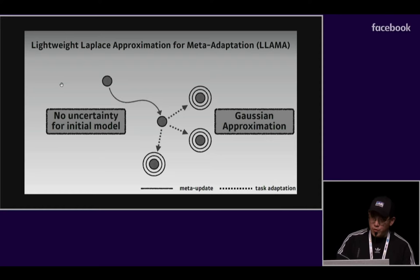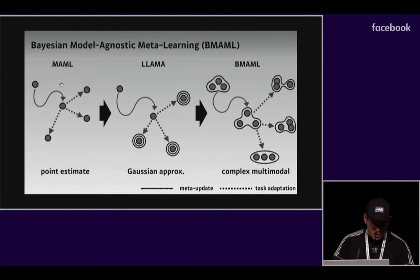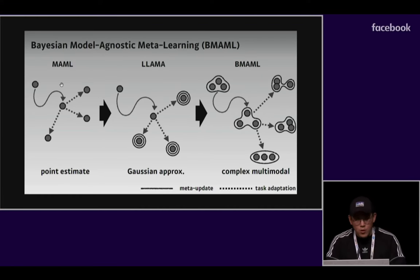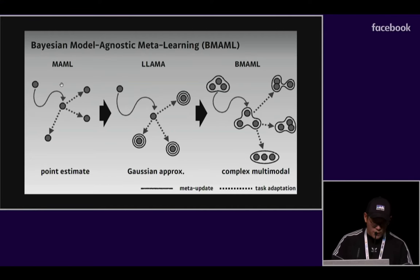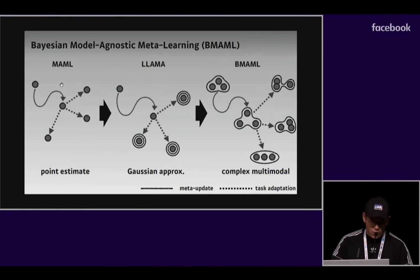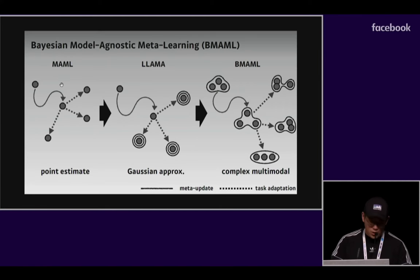The main contribution of our work is to resolve these two problems. This is an overview showing how our method differs from the previous methods. Our method, B-MAML, is able to learn more complex distributions than others and encodes meta-knowledge into a distribution.